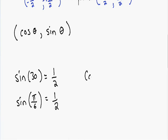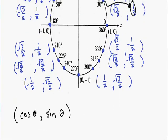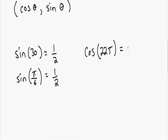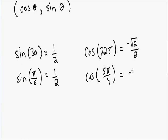Let's try finding the cosine of 225 degrees. The cosine of 225 degrees equals the x-value at 225 degrees, which is negative square root of 2 over 2. And since 225 degrees equals 5 pi over 4 radians, the cosine of 5 pi over 4 is also equal to negative square root of 2 over 2.